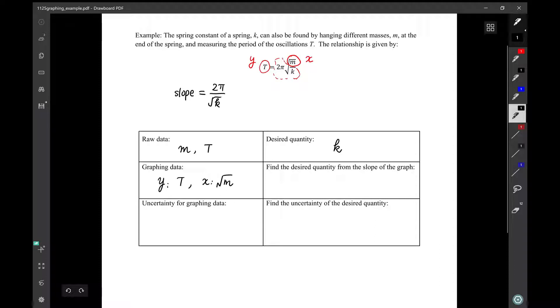And then we want to express k in terms of slope. So we can move square root of k to the other side. That would be 2π over slope. And if we square the equation, we would get k. So we can write here k is 2π over slope squared.